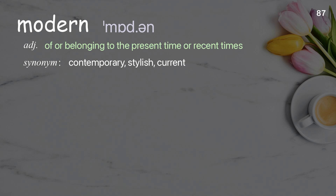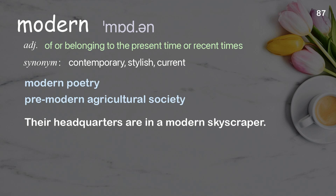Modern. Of or belonging to the present time or recent times. Examples: modern poetry; premodern agricultural society. Their headquarters are in a modern skyscraper.